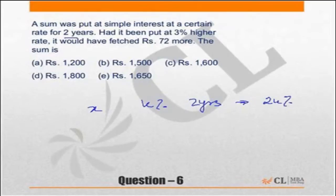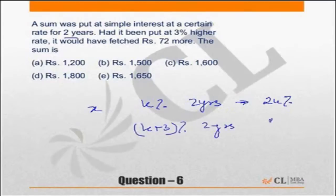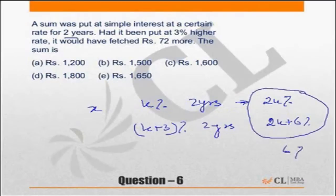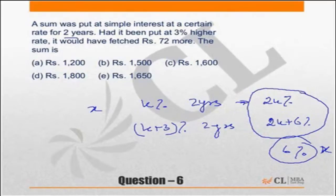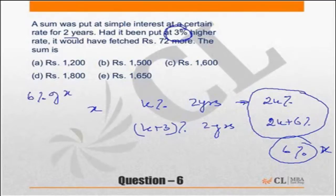If it is put at K plus 3 percent for 2 years, the interest would be 2K plus 6 percent. The difference between these two is 6 percent. So if the rate of interest increases by 3 percent, every year you get 3 percent extra, and in 2 years you get 6 percent extra. That 6 percent of the principal is the extra amount, which equals 72.